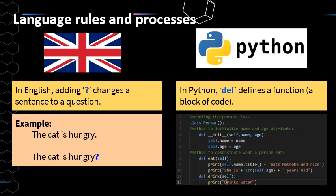For example, adding a question mark at the end of a sentence changes the sentence to a question. So 'the cat is hungry' with a question mark becomes a question. The question mark is kind of acting like an operation in the sense that it's changing the sentence — it's doing something, it's acting as a process.